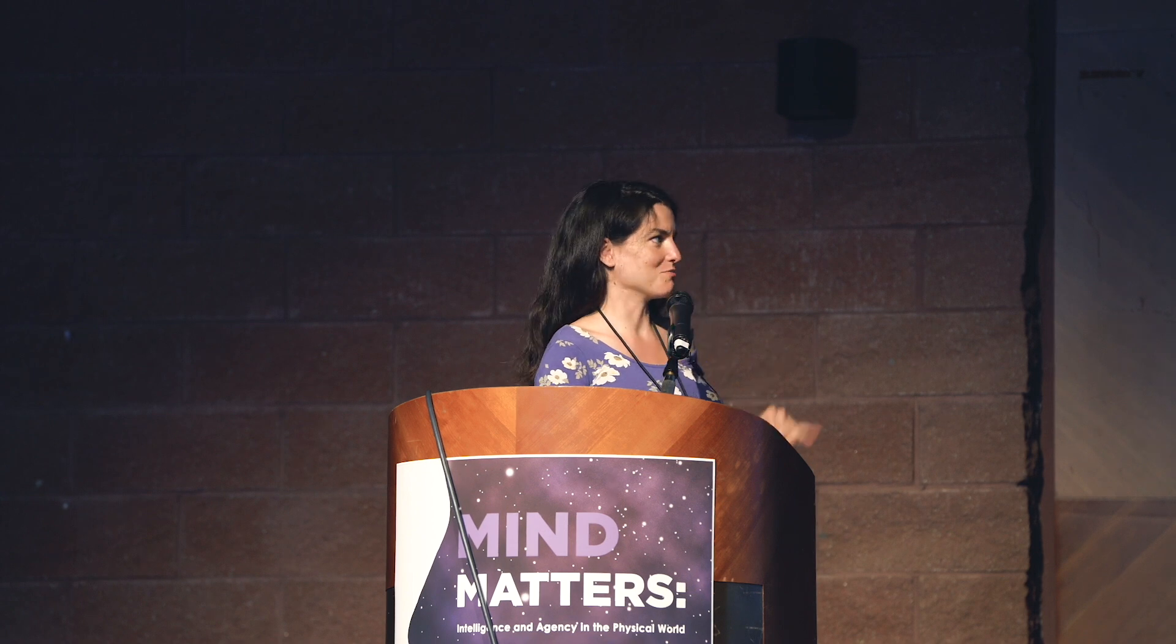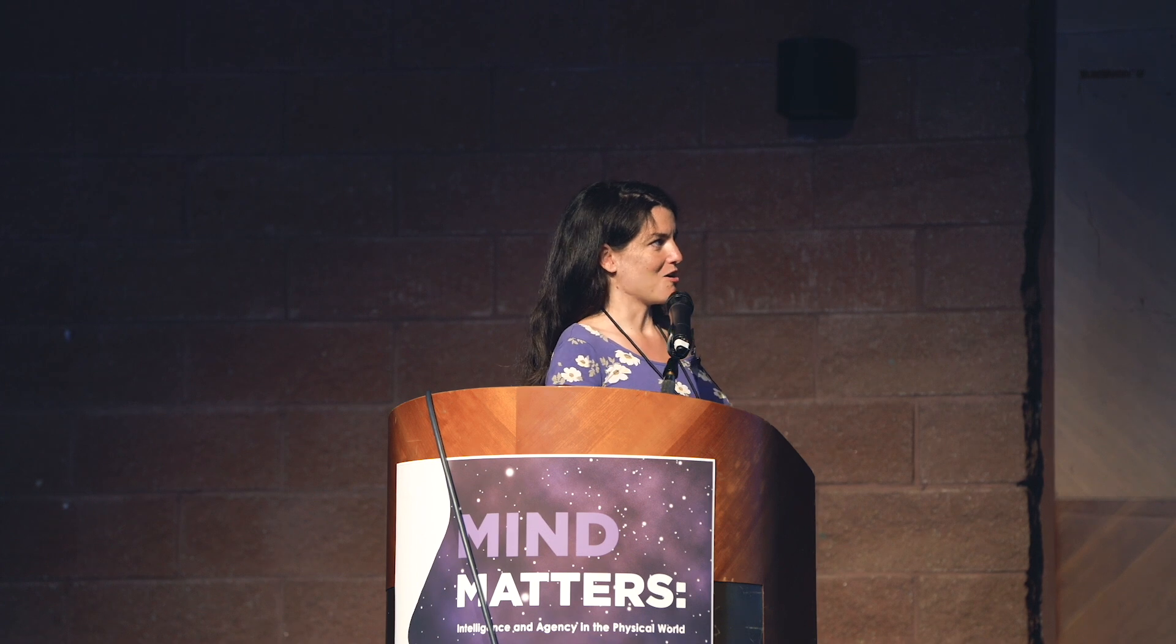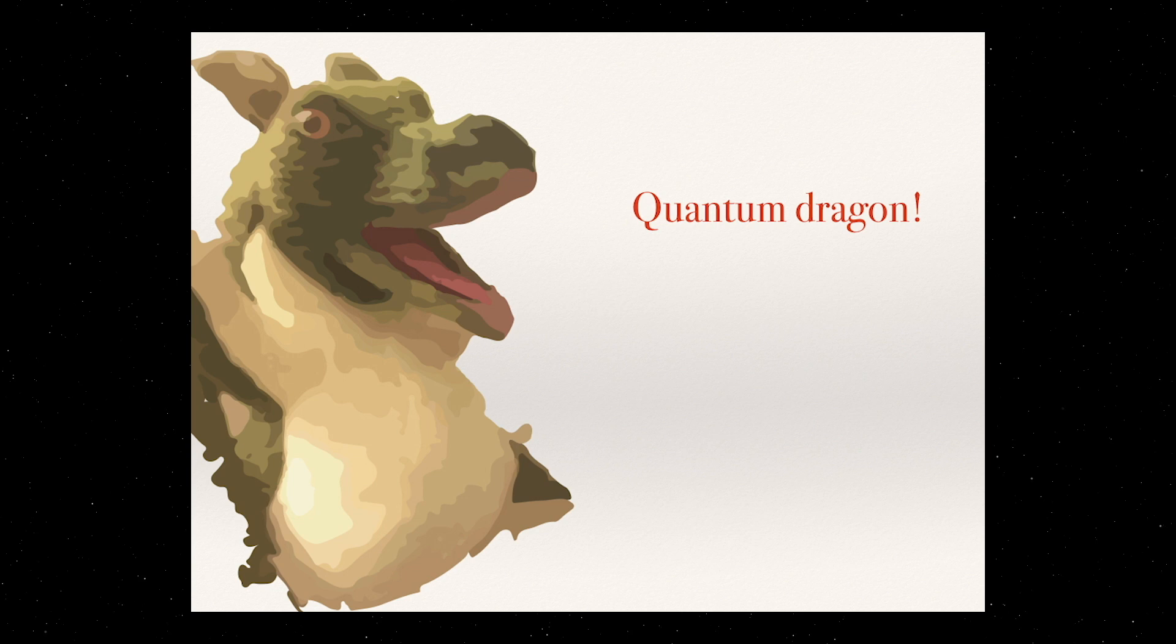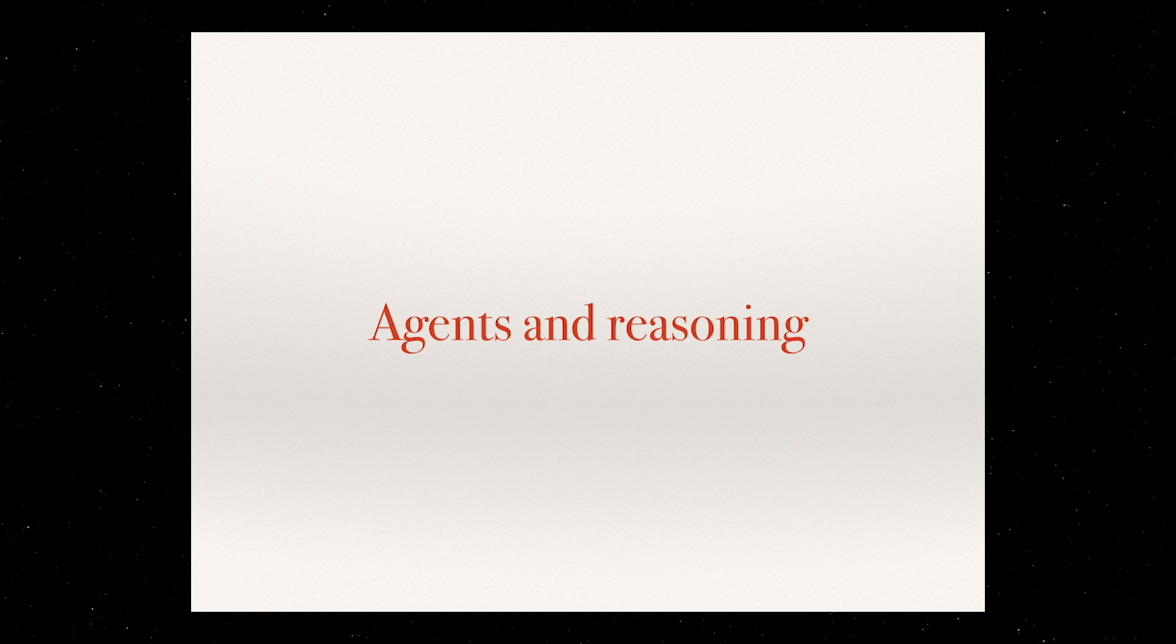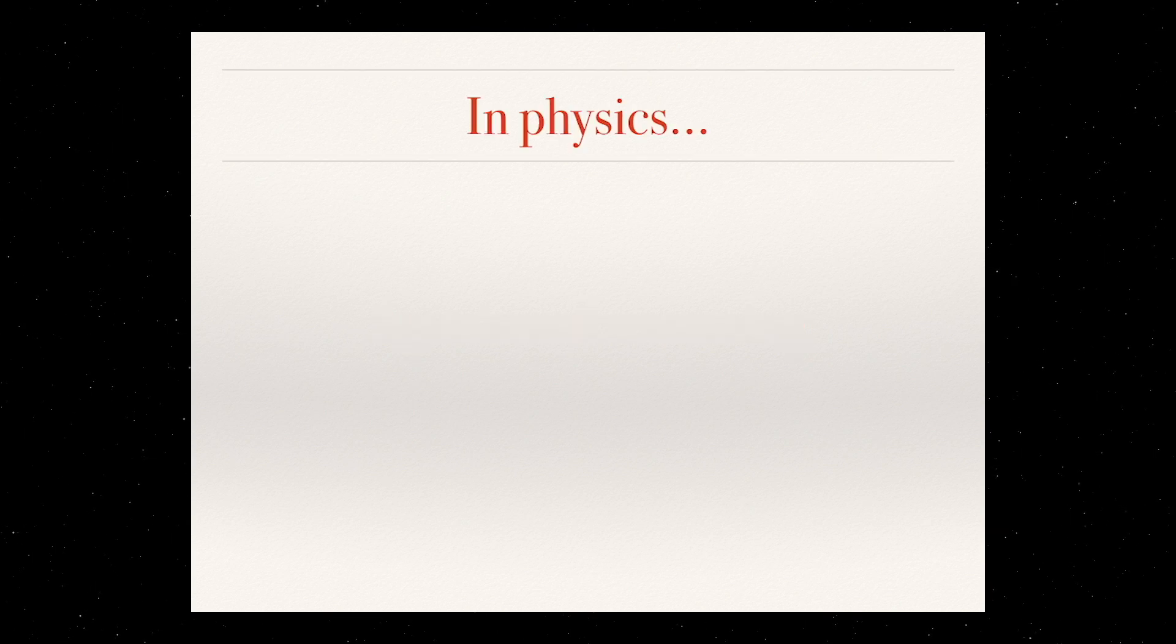I know that people here have many different backgrounds and although this is a quantum session I still try to keep things separated between where you need quantum mechanics and where not. If you see this little dragon this means it's a quantum slide, otherwise everyone should be able to follow. Let's first talk about what we mean by agents and by reasoning and why this is important in physics.